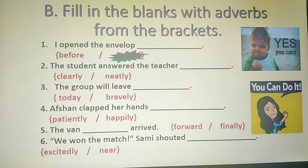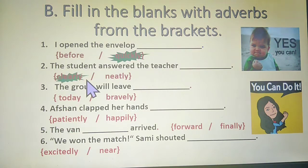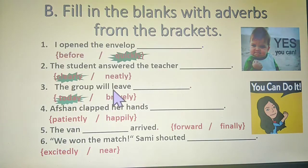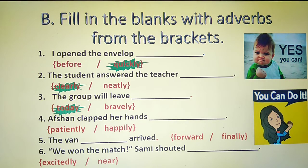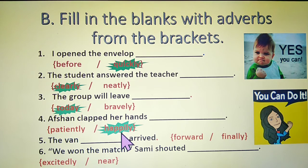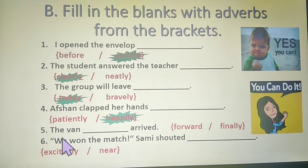Exercise number 2: the student answered the teacher — clearly or neatly? The student answered the teacher clearly. Please circle clearly and write it in its place. Third question: the group will leave — today or bravely? The group will leave today. The next question: Afshan clapped her hands — patiently or happily? The answer is happily. Please write happily. Fifth one: the van — forward or finally — arrived? The van finally arrived.